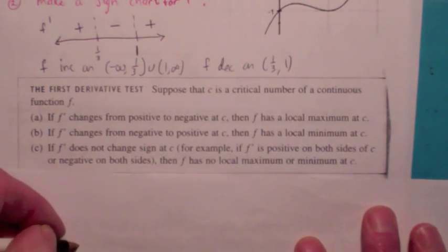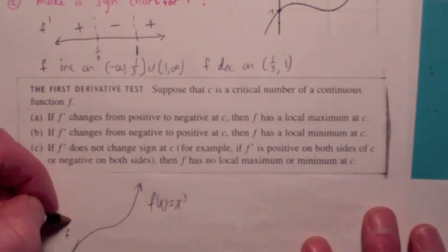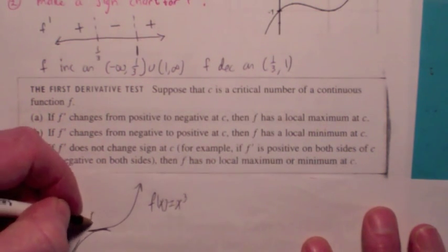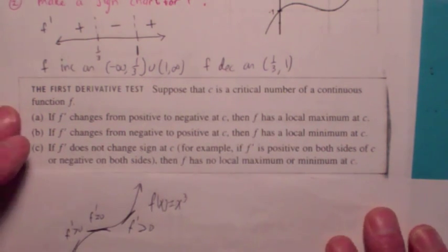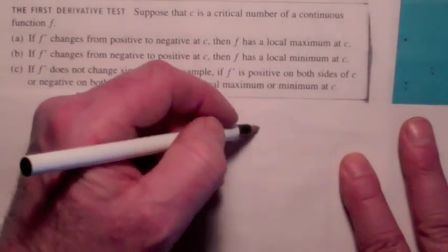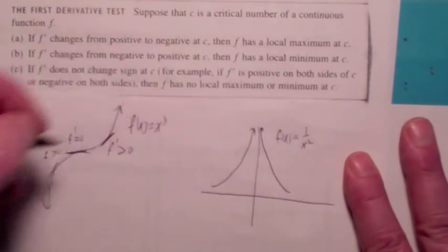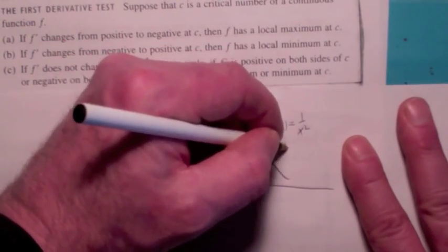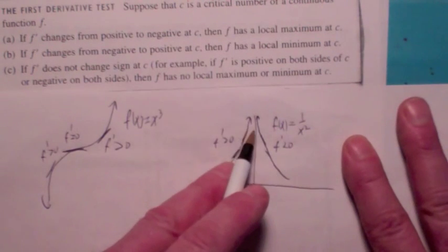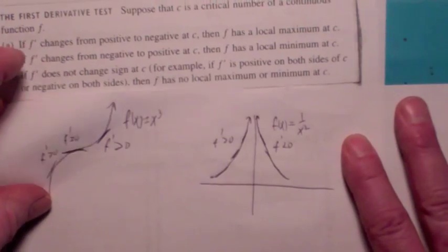It's also possible to have no sign change at all. The classic example is y = x³: the derivative could be positive, then zero at a point, then positive again — no sign change, so no local maximum or minimum. Also important: you can have a sign change in f' at a vertical asymptote. For f(x) = 1/x², f' changes sign at x = 0, but that's not a critical number or a local max. When asking where f is increasing and decreasing, you must consider vertical asymptotes on your sign chart.